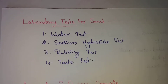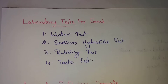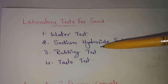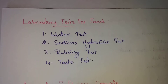To summarize the sodium hydroxide test: place sand in a flask, add sodium hydroxide, stir the solution, and if the color changes to brown, it indicates organic matter is present in the sand.